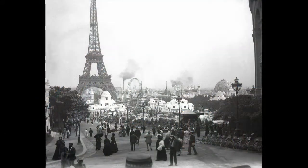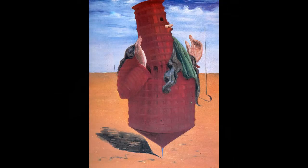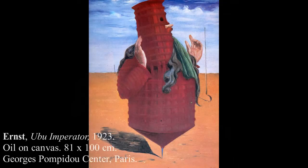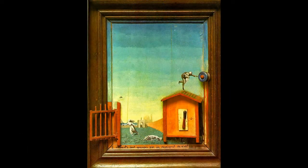In 1922, Ernst moved to Paris, where he perfected his style of art until the outbreak of World War II. Drawing influences from the ideas of Sigmund Freud, Ernst began his most prolific period, where many of his most recognizable paintings were created.